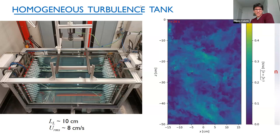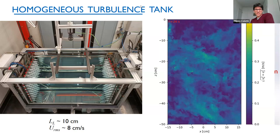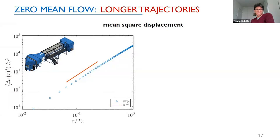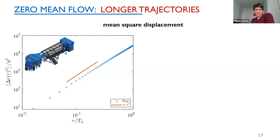The main advantage of the zero-mean-flow facility is that trajectories can be tracked for a very long time, yielding well-converged and extended Lagrangian statistics. Looking at mean square displacement as a function of time lag: from the open channel flow I can only see the ballistic regime because trajectories last about one integral timescale. With the zero-mean-flow facility I have access to trajectories about 10 times longer, showing a clear transition from the ballistic regime to the diffusive regime.